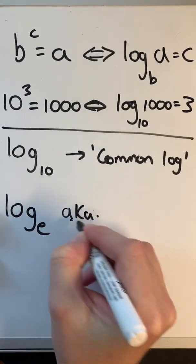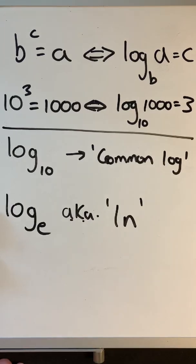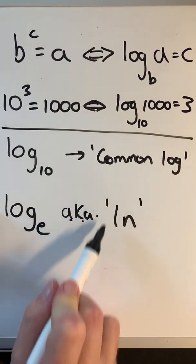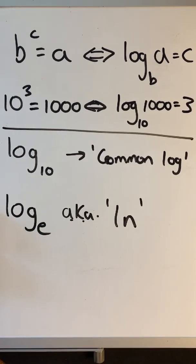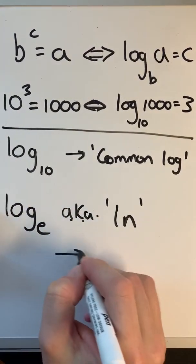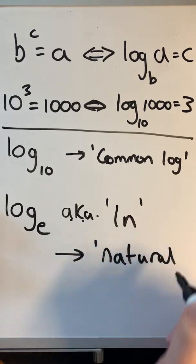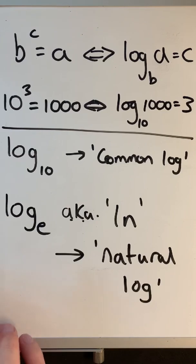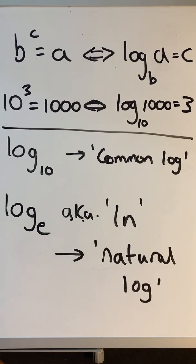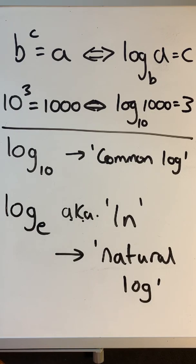Log to the base e can also be written as ln. Some people mistake that for 'in' sometimes, but remember it's a lowercase L. Log to the base e is also known as the natural log. It doesn't matter which base you use when solving equations — you'll end up with the same answer. The numbers in your calculation will look different, but the answer will come out exactly the same. Log base e is used in engineering, business, physics, and many applications.